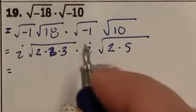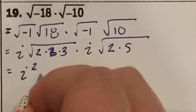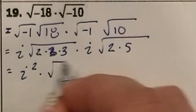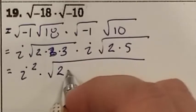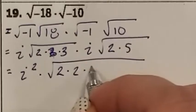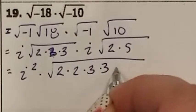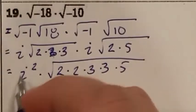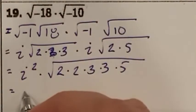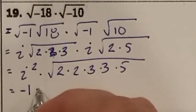We have i times i, which gave me an i squared. Inside the square roots, we have a 2 times a 2 times a 3, 3, 5. What is i squared? i squared is negative 1 multiplied by,